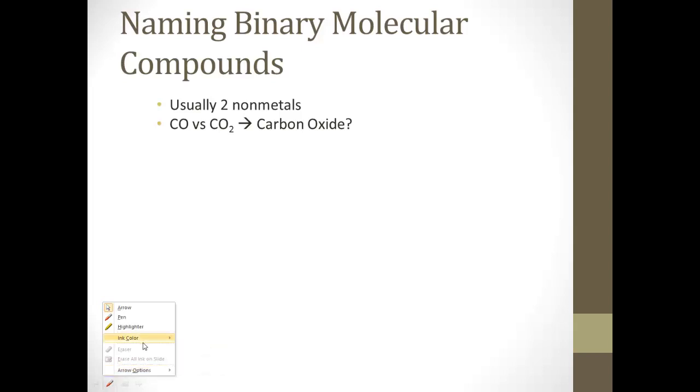We're usually going to be dealing with 2 non-metals. But it's important to realize that now, since there's different kinds of compounds using the same elements, we have to be a little more careful. Because with carbon and oxygen, you can have CO versus CO2. If we were to just say carbon oxide like we do with the ionic compounds, it wouldn't necessarily work. So we have to use prefixes.